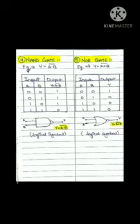Next comes the NOR gate. It is the combination of the NOT gate and the OR gate, so the equation is Y equals A or B, bar. The truth table and the logical symbol are shown respectively. Thank you.